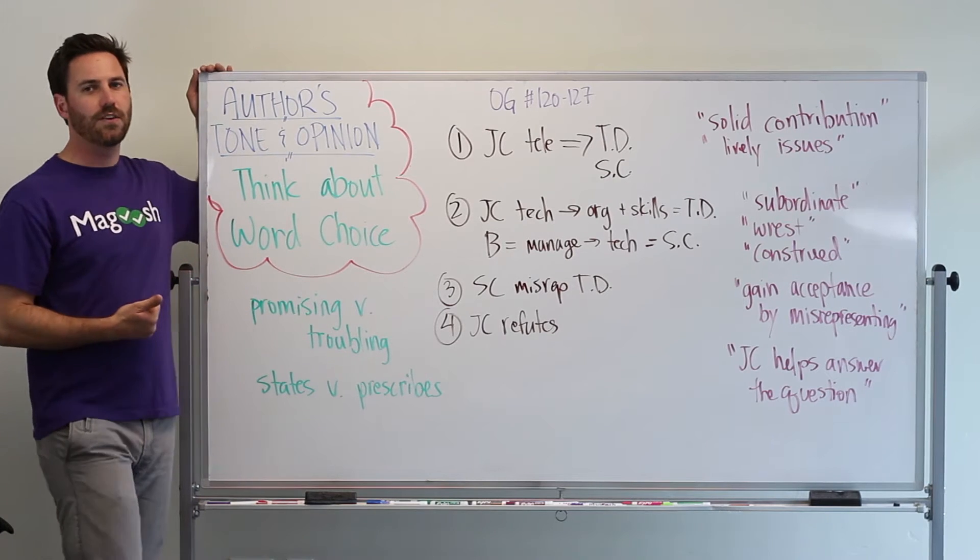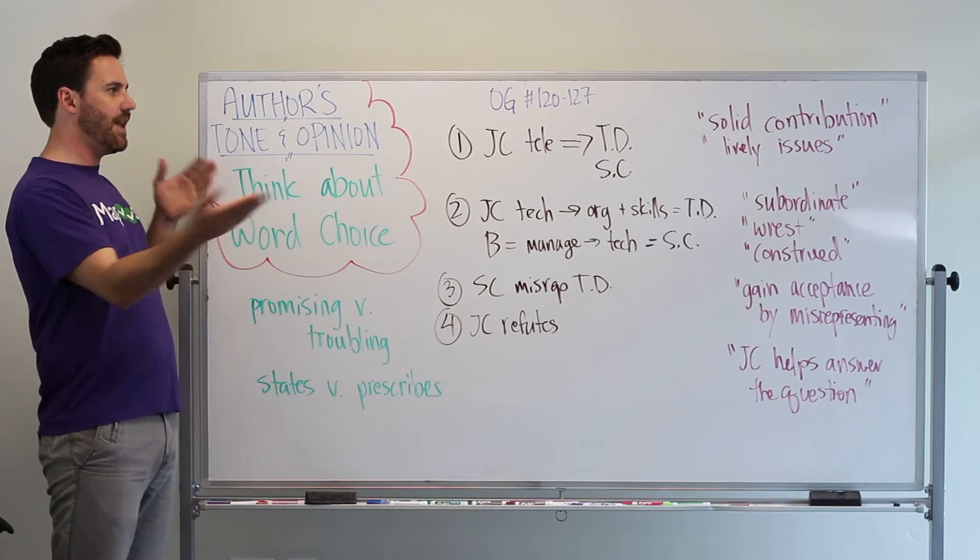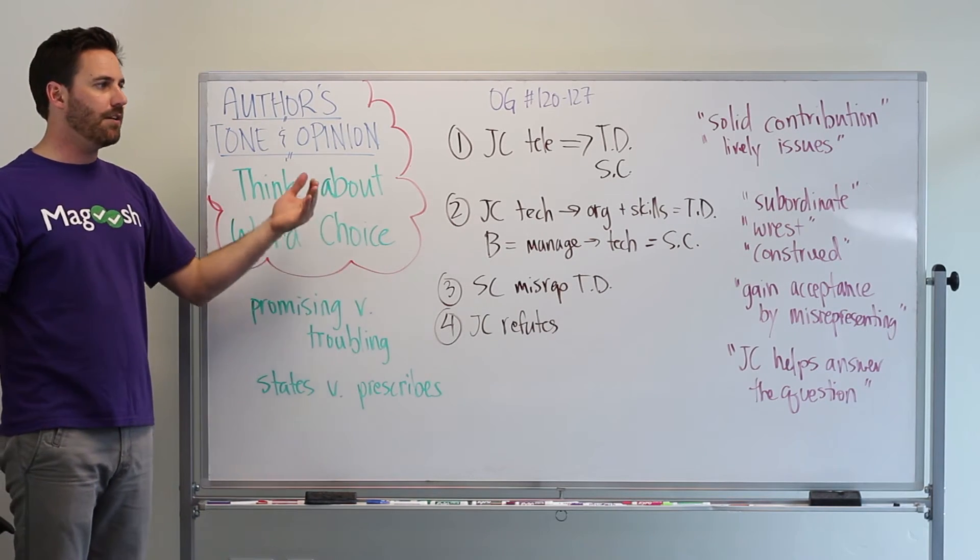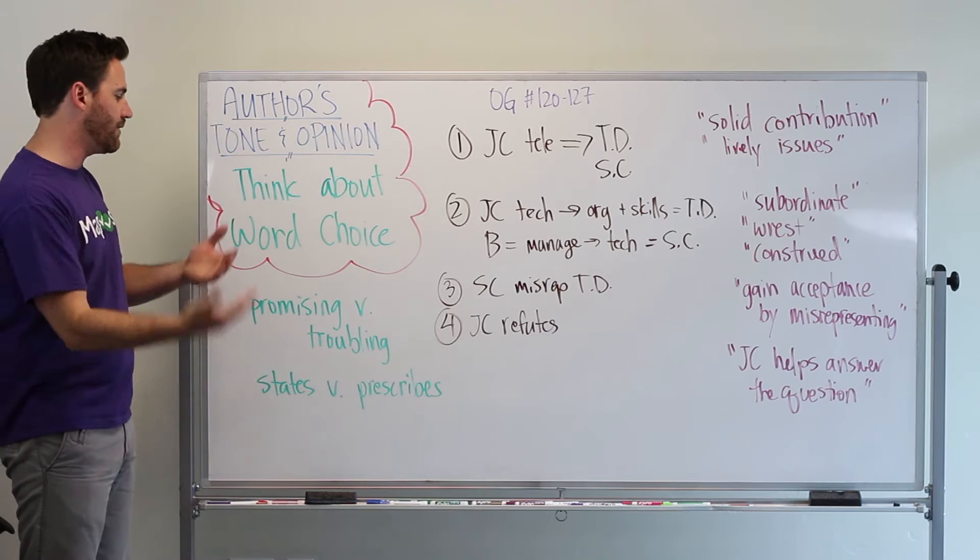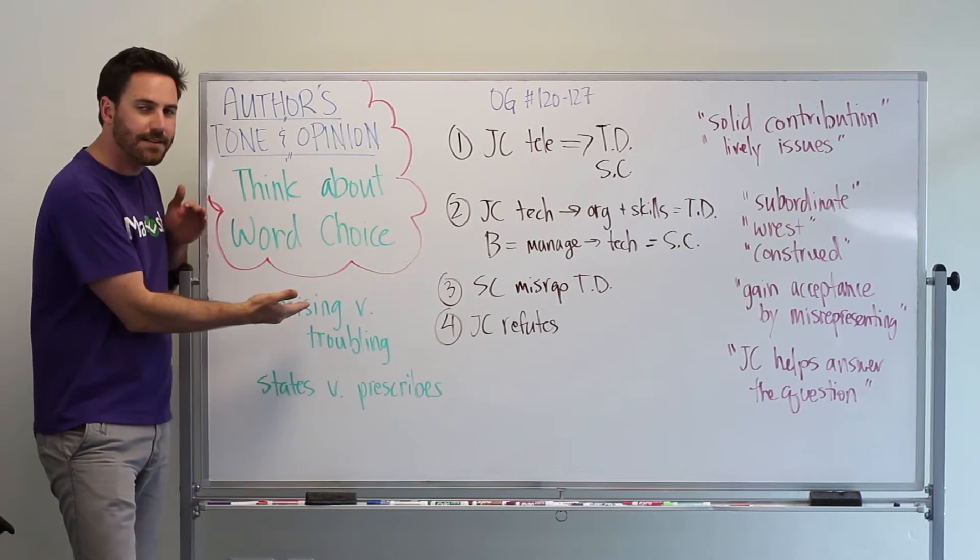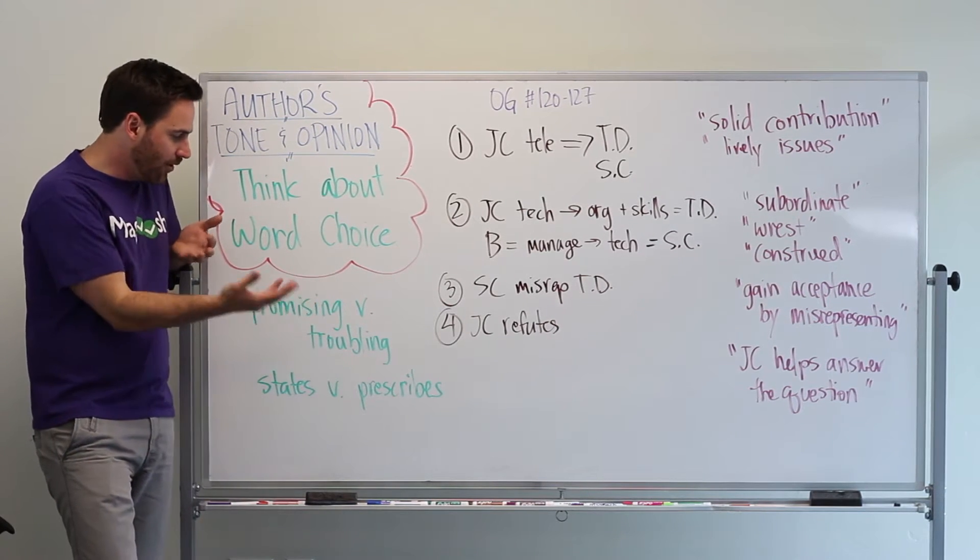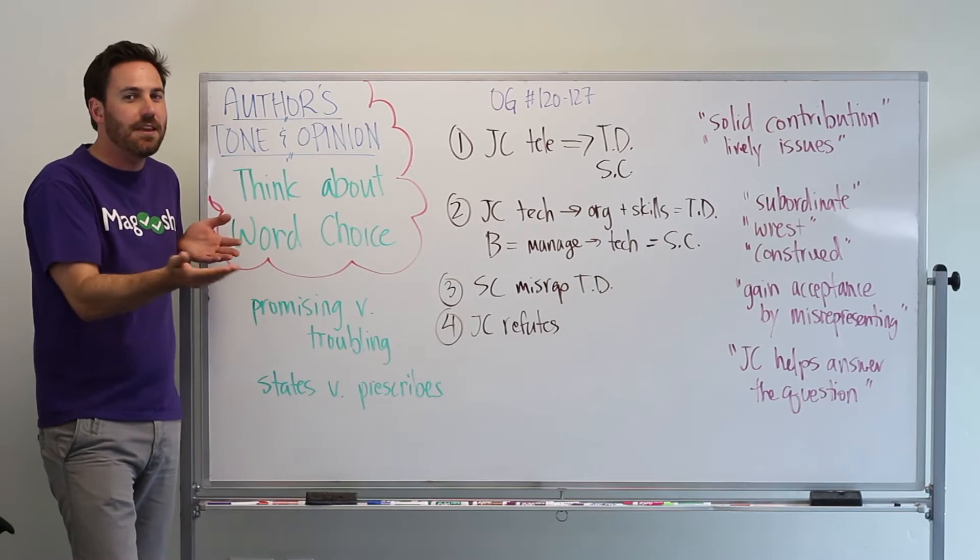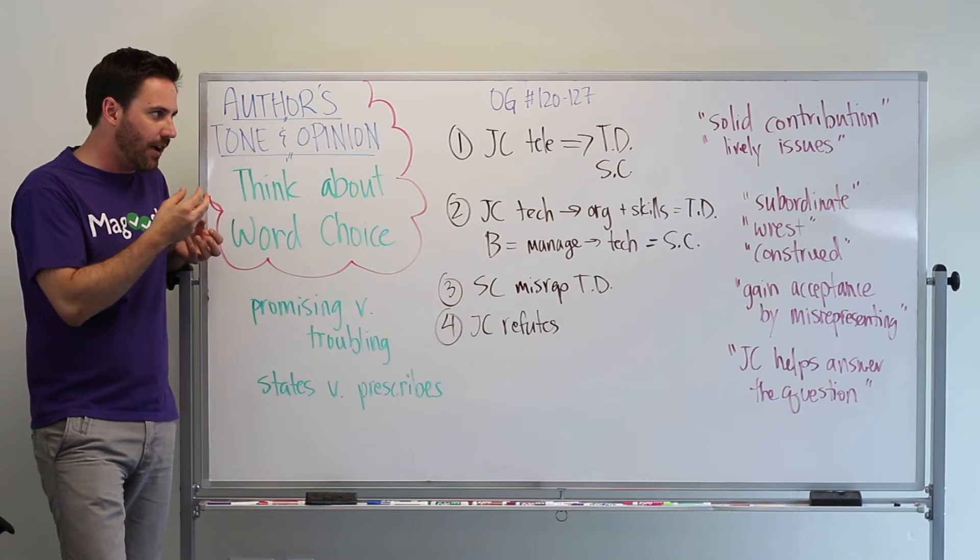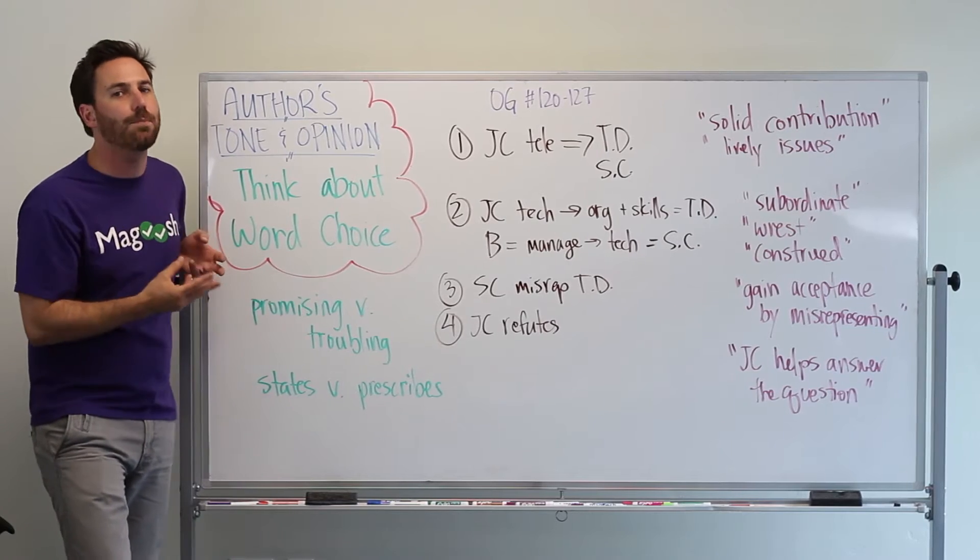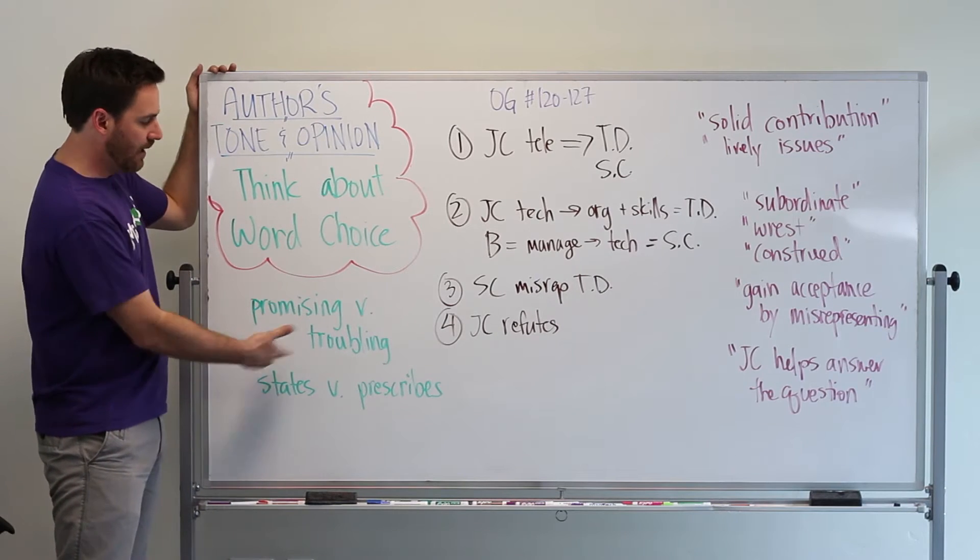So, think about the word choice when you're reading. And this is kind of hard to do because when you're reading a sentence, you're presented with the words that the author chose. But, to be good at this, you have to think about all the words the author didn't choose. So, think about, if you saw a sentence that had the word promising in it, there's so many other words that an author could have used, like troubling or even just stating that something might be this way. And you really have to think about what other options were available to the author and why did the author end up choosing promising instead of troubling.